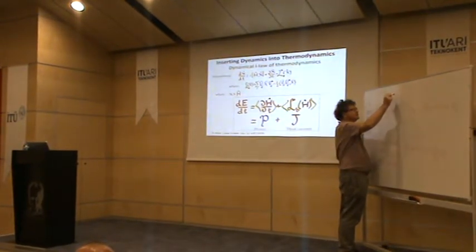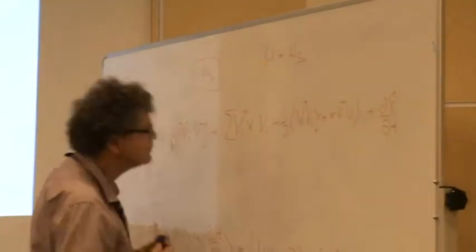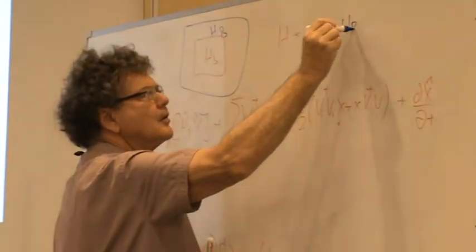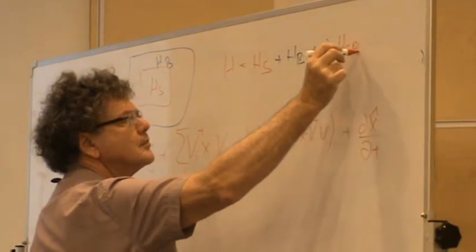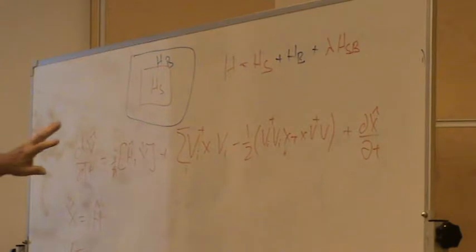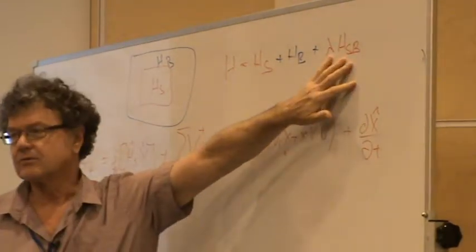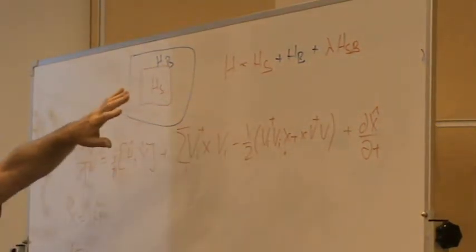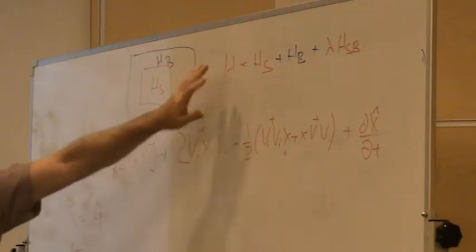What you do is: you have your system and your bath, and you assume weak coupling. There is a standard method — the Born-Markov second-order weak coupling limit — to derive the coefficients. If you do that, which is called the Davis construction by E.B. Davis from around 1975–1976, you get Lindblad's form.